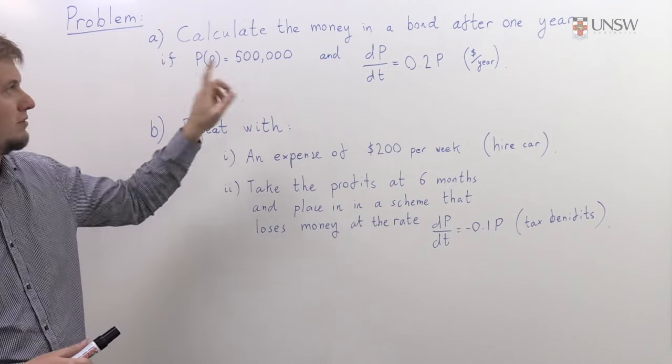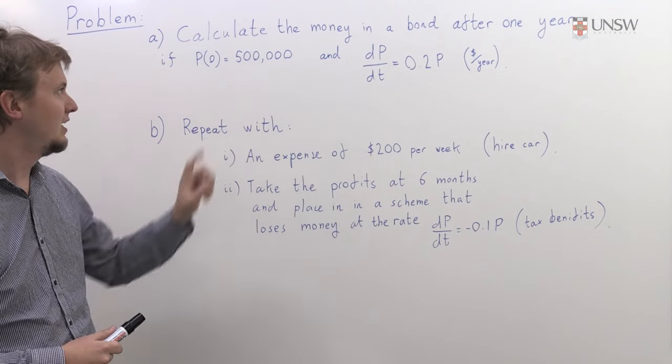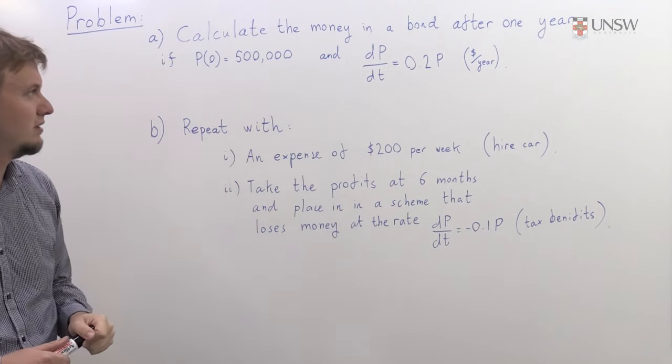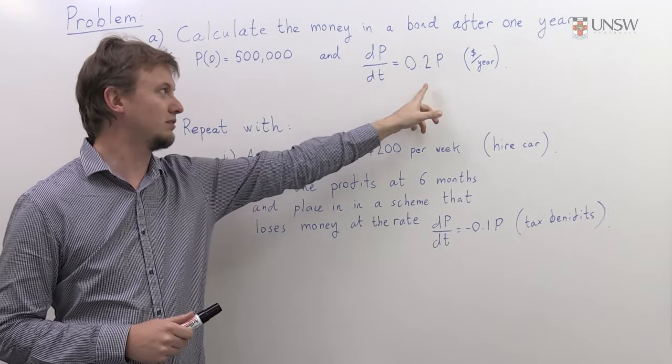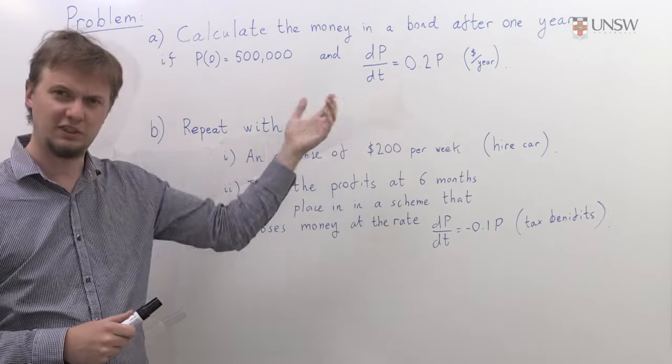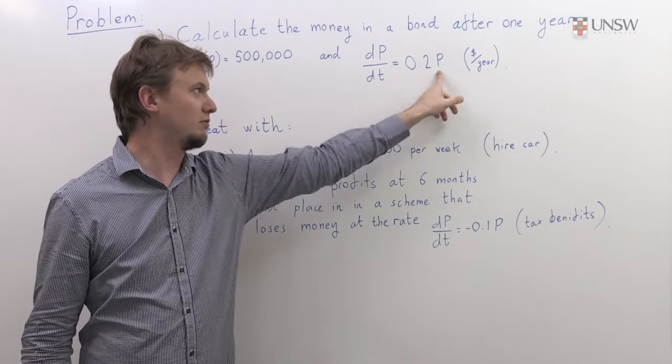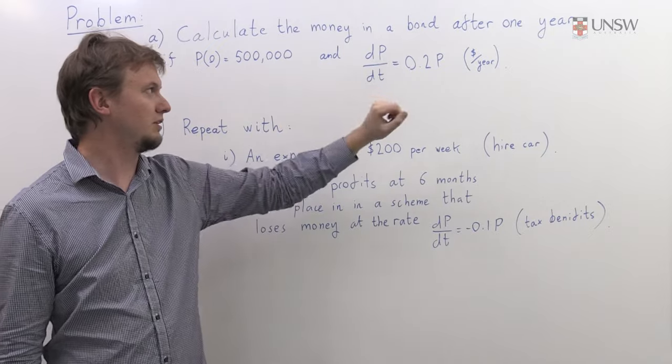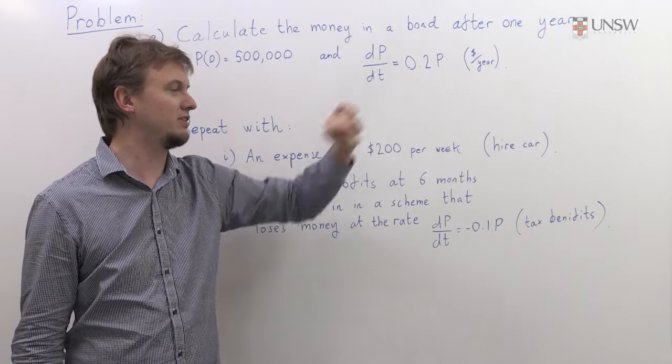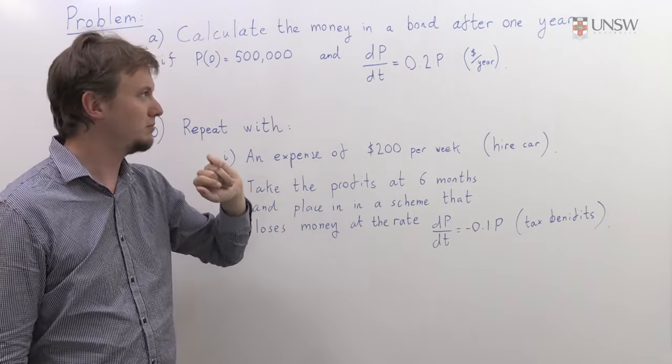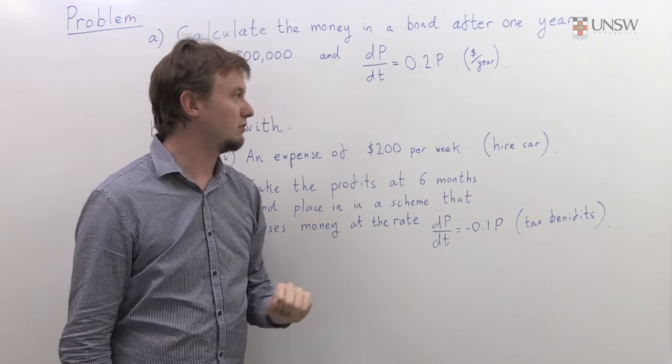In part A, we're going to start with a bond which has initially half a million dollars and it's going to increase at a rate given by this equation here. So this is actually a continuous version of compound interest. The rate of change of the bond is 20% of the bond's value, and this is given in dollars per year.